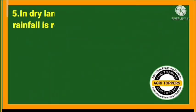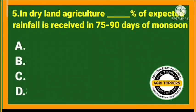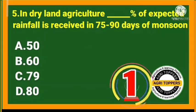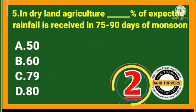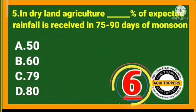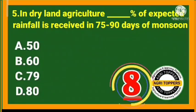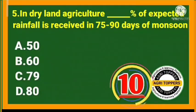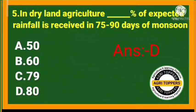Fifth question: in dry land agriculture, what percentage of expected rainfall is received in 75 to 90 days of monsoon? The answer is 80 percent.